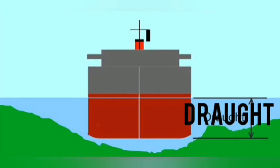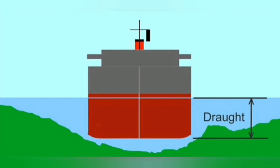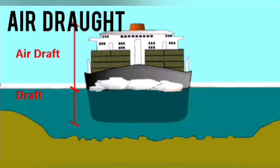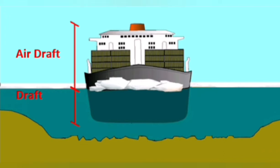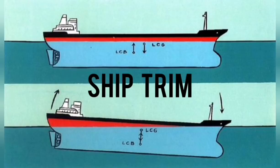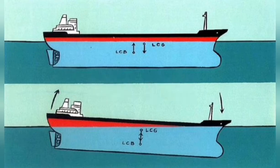Draft: The draft is the vertical distance between the waterline and the bottom of the hull. The draft determines the minimum depth of water a ship can safely navigate. Air Draft: It is the vertical distance between the summer waterline and the highest fixed point of the ship.